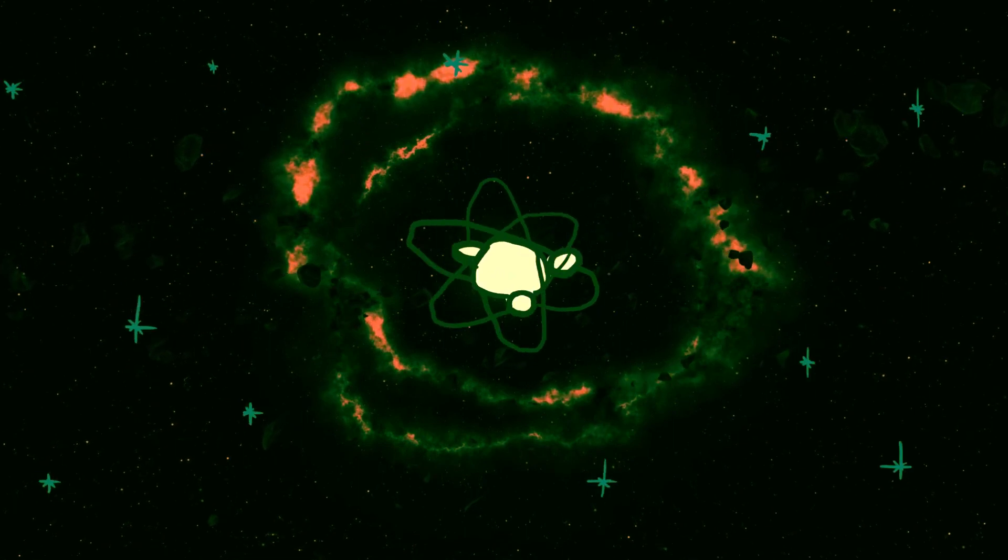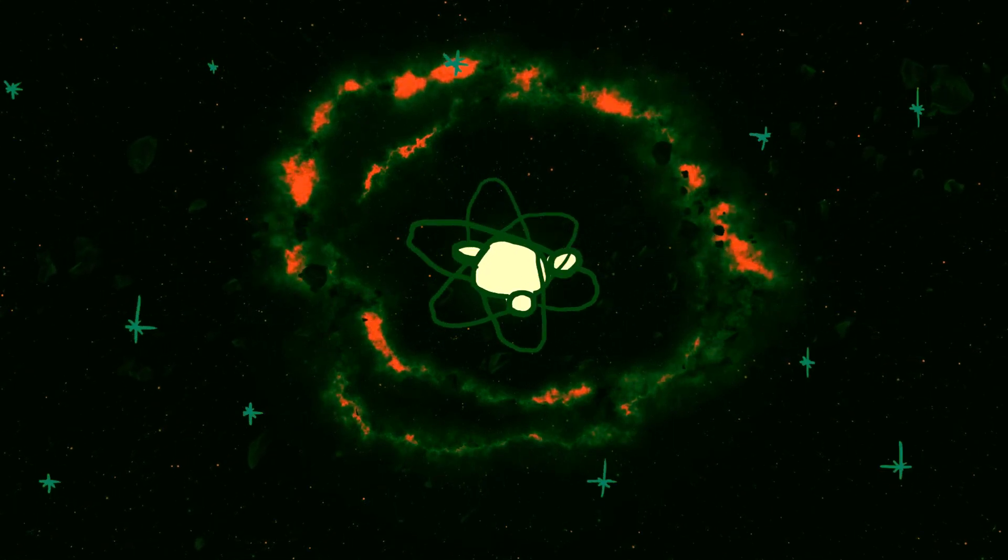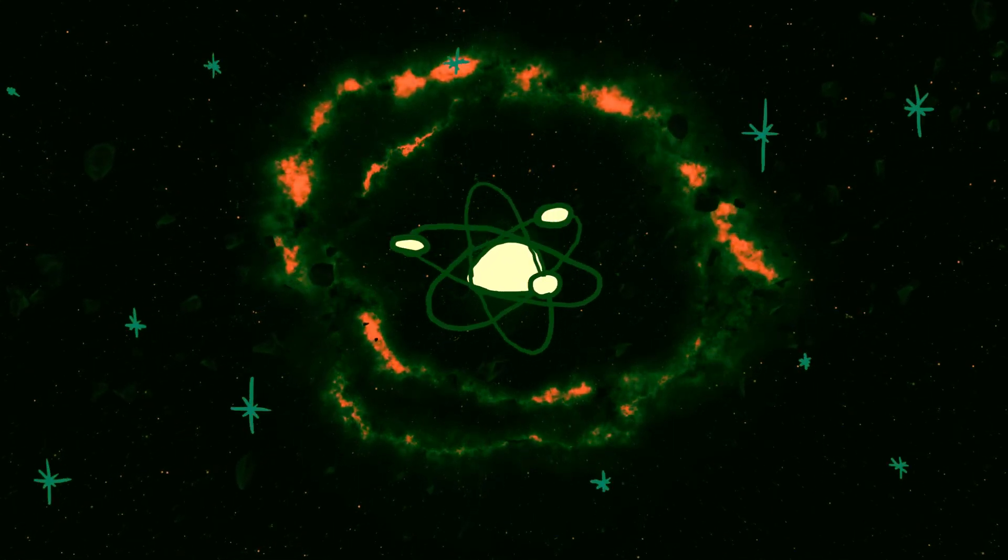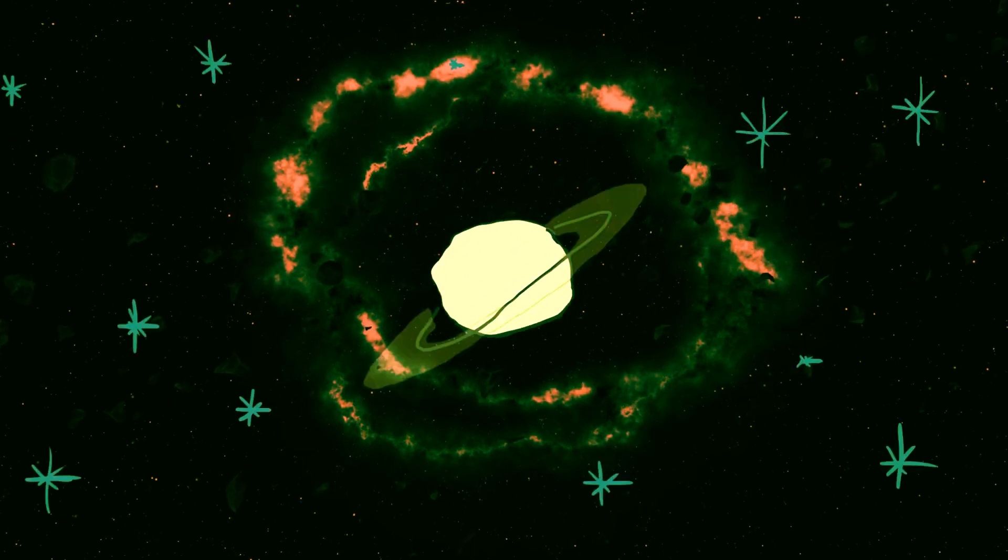As the solar nebula began to condense and collapse due to gravity, it formed a rotating disk of gas and dust around the young Sun.